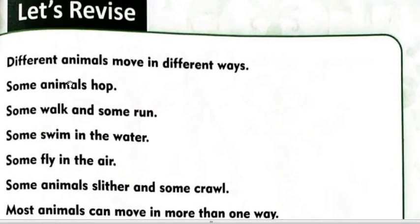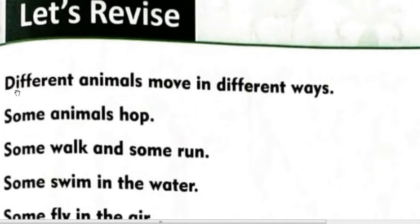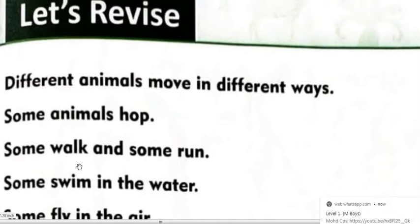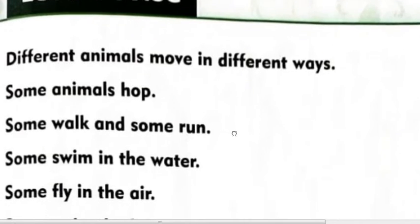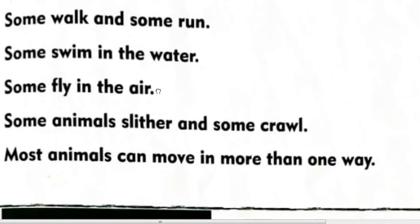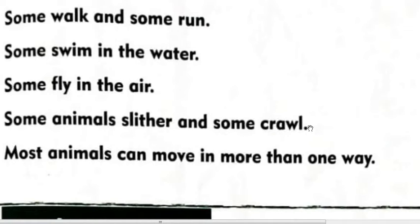Now let's revise. Different animals move in different ways. Some animals walk, some run. कुछ जो हैं वो कूदते हैं, यानिके छलांग लगाके चलते हैं — some hop. Some swim in the water, कुछ पानी में तैरते हैं. Some fly in the air, कुछ हवा में उड़ते हैं. Some animals slither and some crawl — कुछ रिंगते हैं और कुछ रुप-रुप कर चलते हैं.